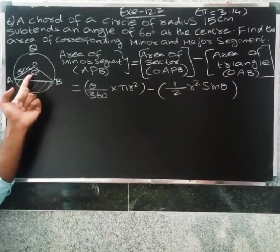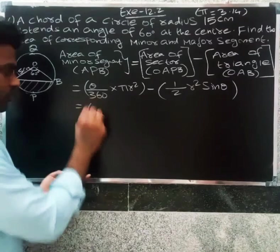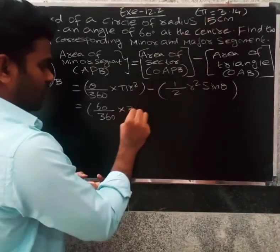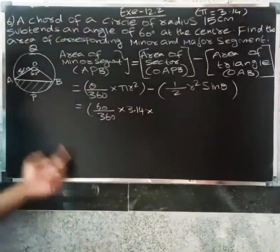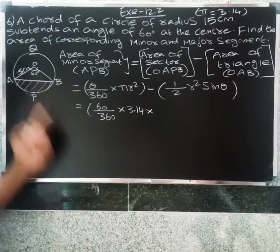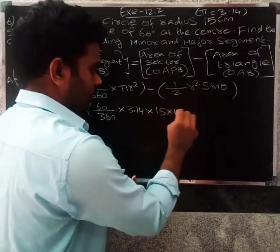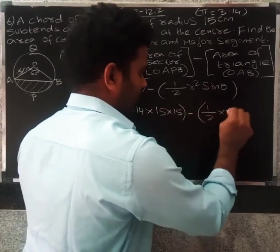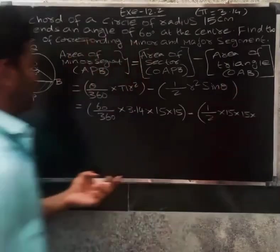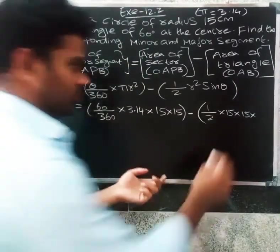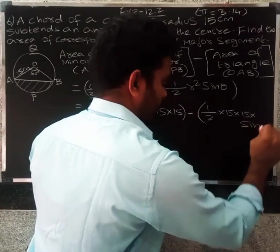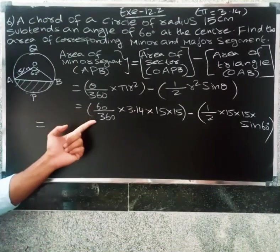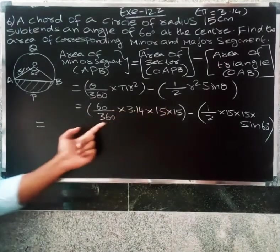Now we have theta is 60 degrees, r is 15. So substituting, 60 by 360 into 3.14 into 15 into 15, canceling, we get 117.75.